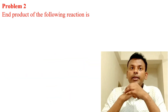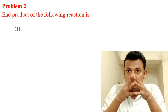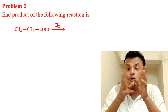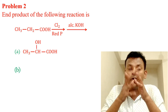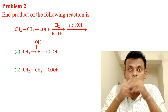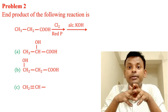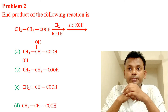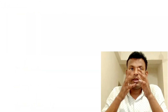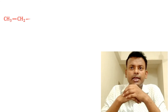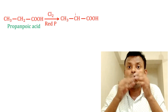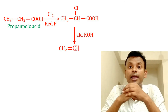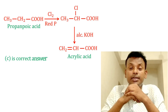Second question: Find the product of the following reaction. This compound first reacts with Cl2 and red P, second step with alcoholic KOH. Options A, B, C, and D are given. The correct option is C, because first propanoic acid reacts with Cl2 and red P — this is the HVZ reaction — to give alpha-chloro acid. The second step with alcoholic KOH is the elimination product, which gives acrylic acid. So option C is the correct answer.